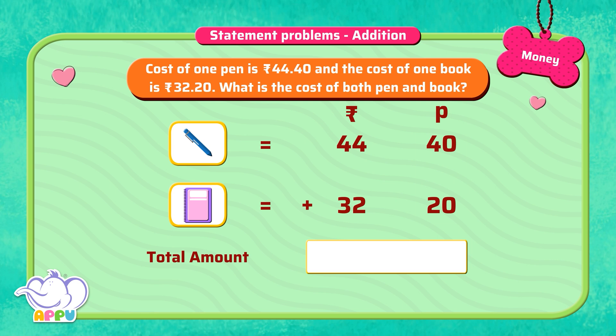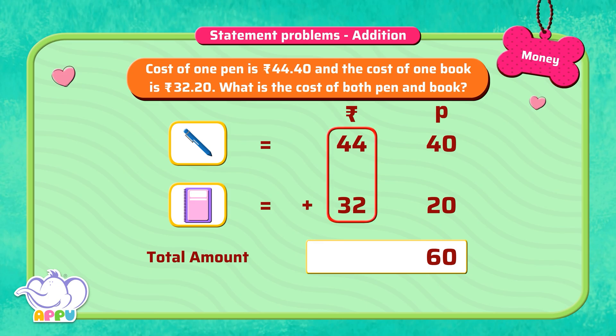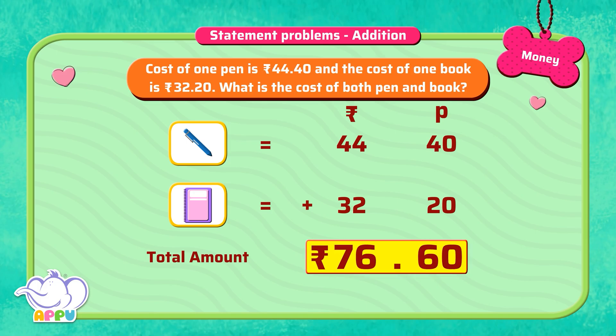Let's add the paise first. 20 plus 40 equals 60. Let's add the rupees. 32 plus 44 equals 76. So the cost of both the pen and the book is 76 rupees 60 paise.